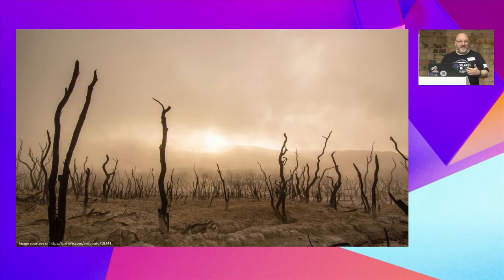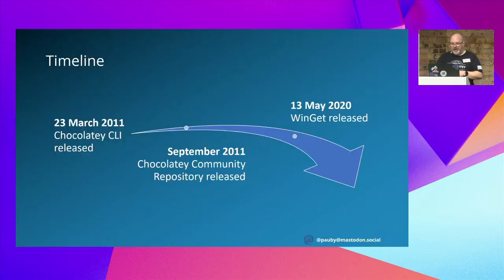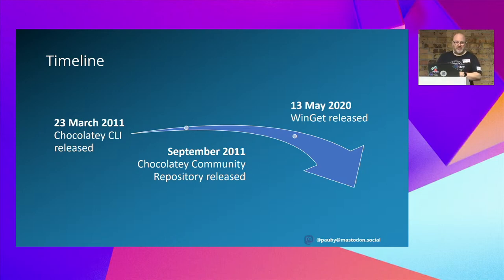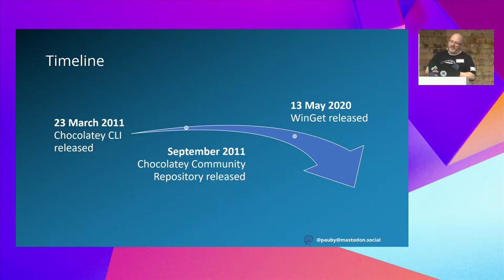That was the Windows landscape — very much the opposite of what we've got on Linux. But before Chocolatey CLI was born, that was the situation. Once it was released in March 2011 — which is 12 and a half years ago — a lot of people don't realize Chocolatey CLI has been around for a very, very long time, longer than some of the package managers we've talked about over the last couple of days. Six months after that was released, the Chocolatey Community Repository was also released, containing the public Chocolatey packages you can consume with Chocolatey CLI.